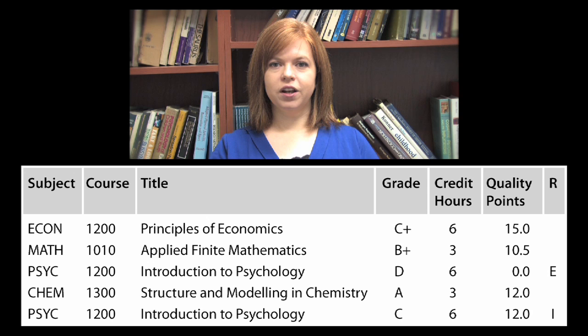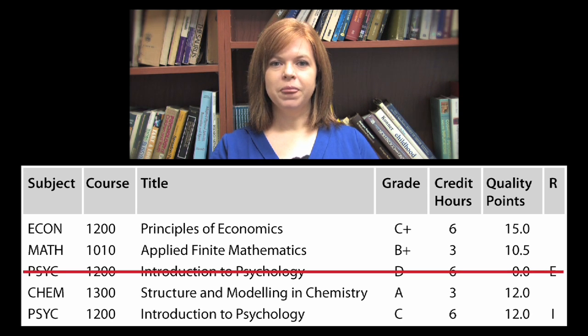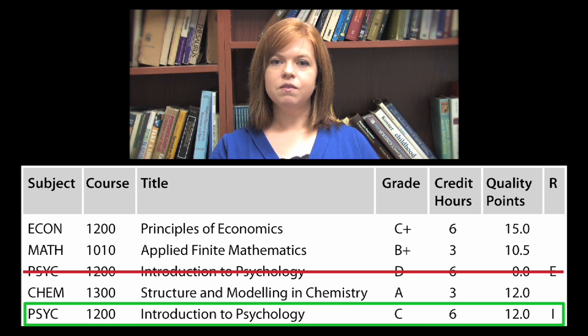Before we begin, we will recalculate your credit hours. On Aurora Student, credit hours are referred to as GPA hours. Before you repeated Psychology 1200, you had 18 credit hours. Now that you have repeated it, the first 6 credit hours from your first attempt will be excluded from the calculation, and the 6 credit hours from your second attempt will be included. This will leave you with an unchanged total of 18 GPA hours.